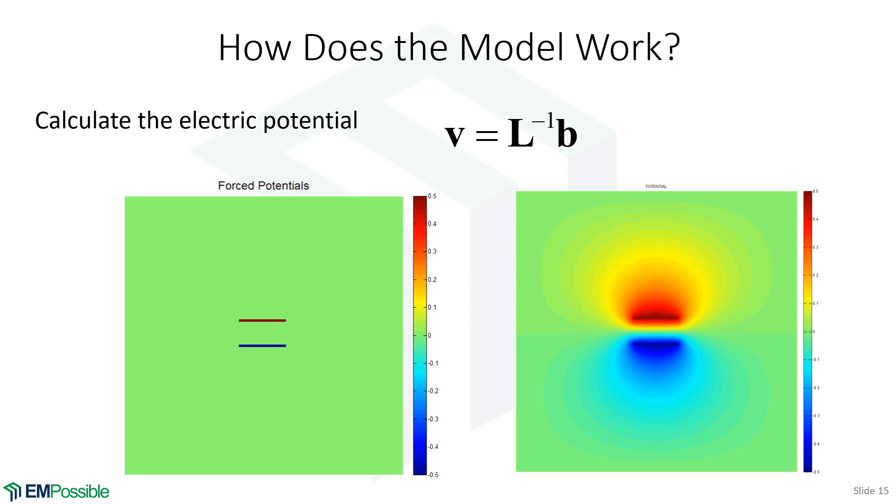Now we have a solvable form, V equals L inverse B, and B is this column vector where I've put in my forced potentials. Once I get this, I have a column vector, and I want to reshape that back to a two-dimensional array. And when I plot that, I get the electric potential around these plates. And I can look at that and say, yeah, that makes intuitive sense. I have high potential at the top, low potential at the bottom, and along any little path, it varies essentially linearly.